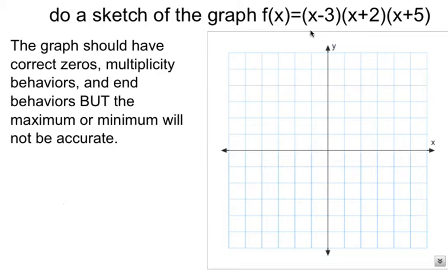This one has three x-intercepts. If I took each one of these and set them equal to zero and solved them, I would get x equals 3, x equals negative 2, and x equals negative 5.